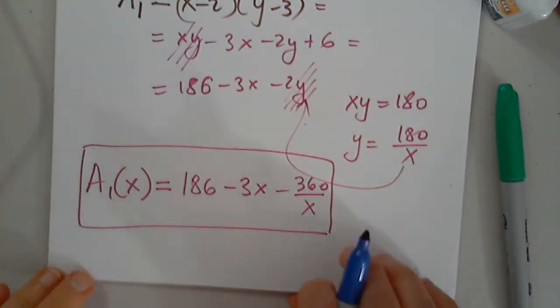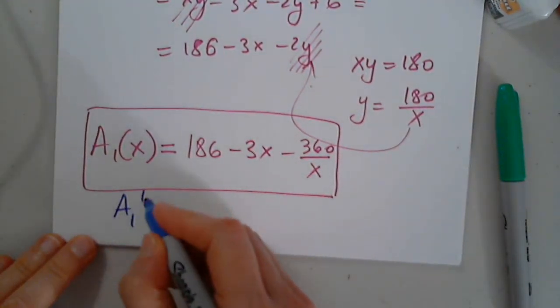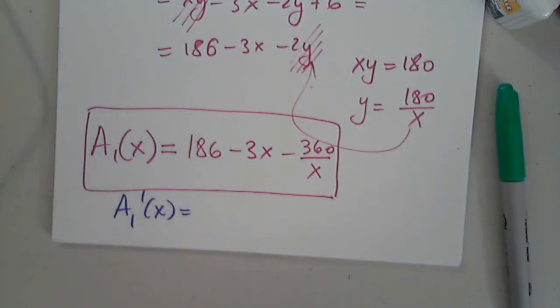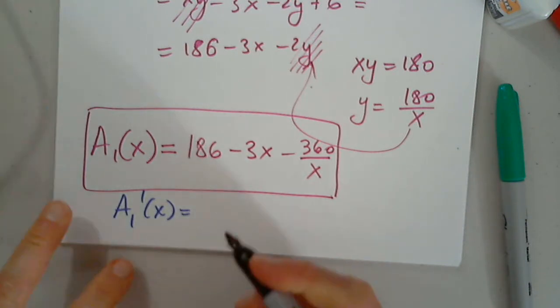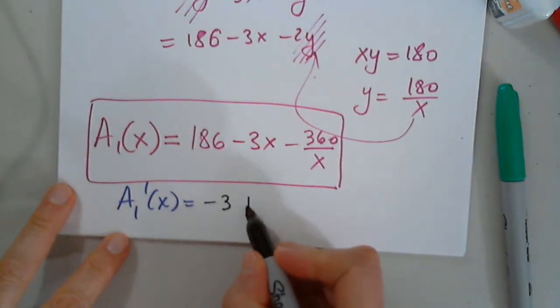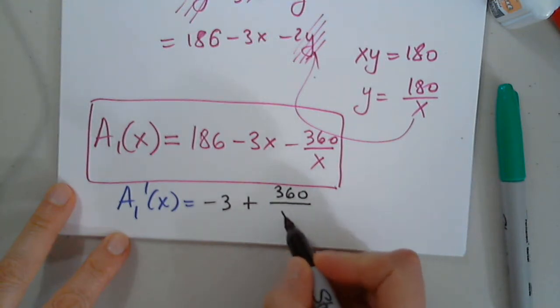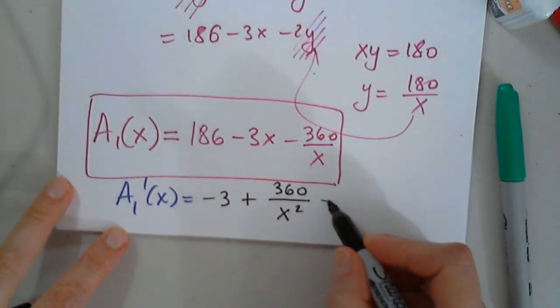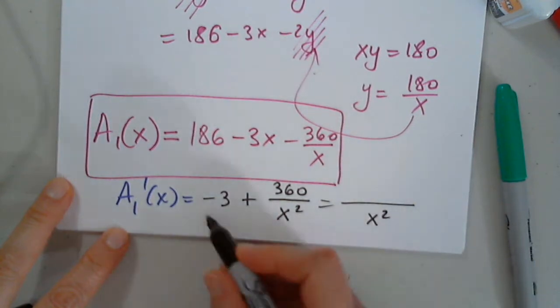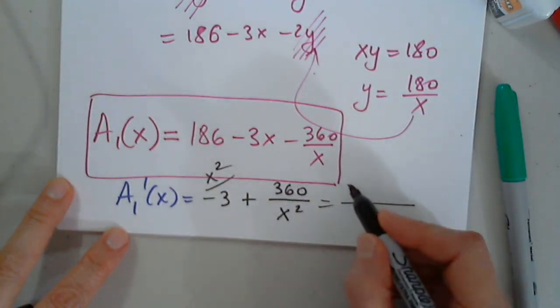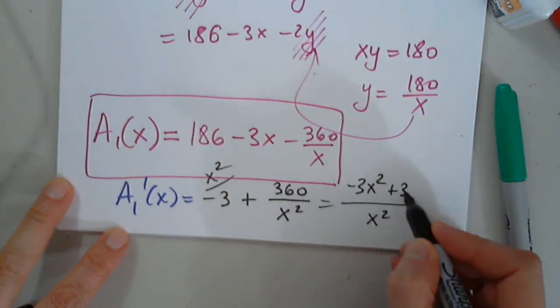So then A prime, I'm sorry, A1 prime is, can anyone give us A1 prime? Is it going to be negative 3 plus 360 over X squared? That's it. So this will be X squared in the denominator. This is the only negative 3X squared plus 360.